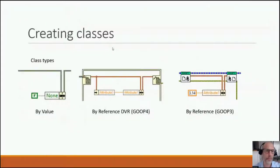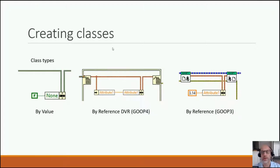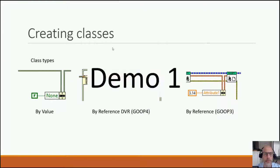When you create a class you can select different types: the by-value native one on the left, the reference-based with DVR which uses the In-Place Element Structure, or Group Three which uses lock and unlock VIs. Let's just get started with a quick demo.